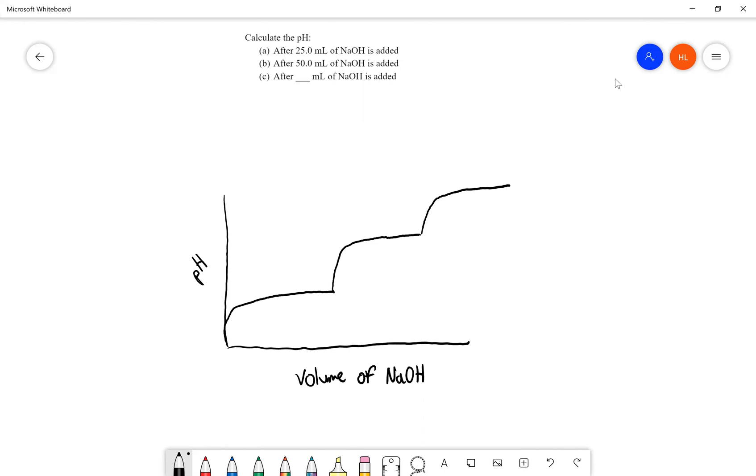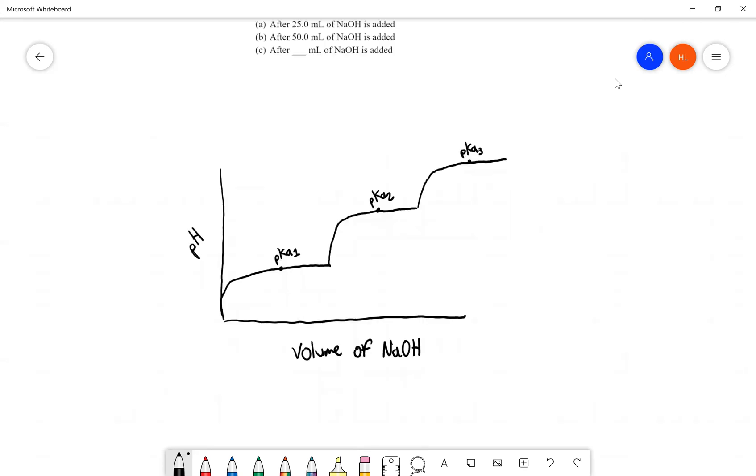And in the middle of these buffer regions will be the pKa, and this will be pKa of one, will be the second pKa, and this will be the third pKa. And to make everything abundantly clear, I'm also going to